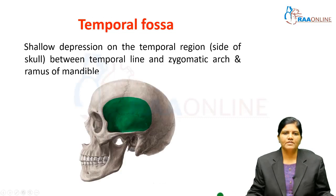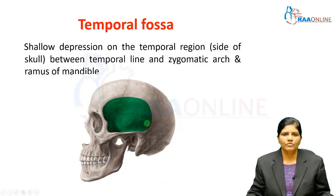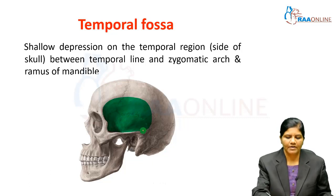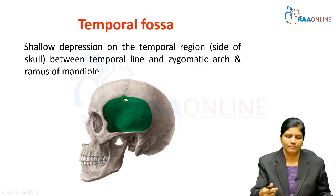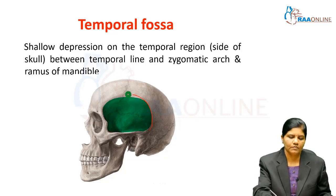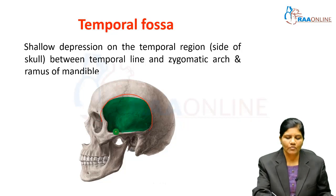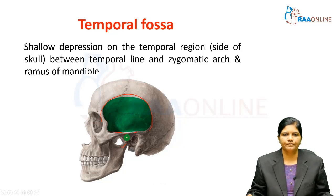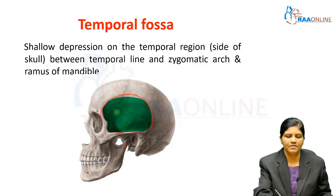The temporal fossa is a shallow depression on the temporal region on the side of the skull. It is present between the temporal lines above, the zygomatic arch below, and the ramus of the mandible below.